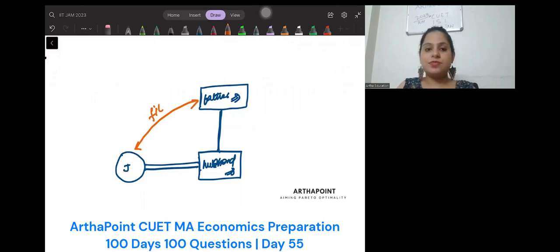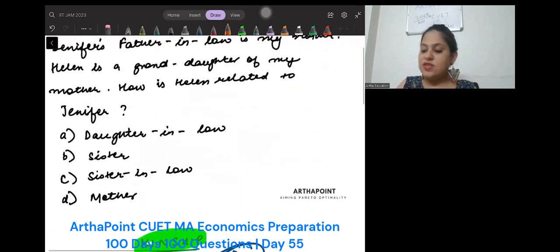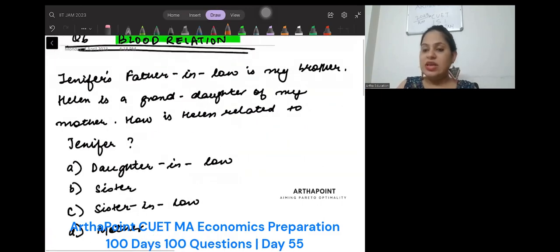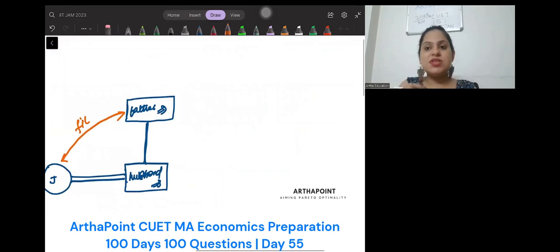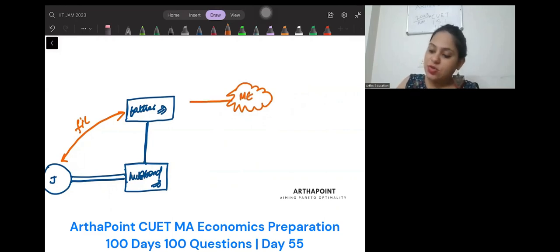Father-in-law. So Jennifer's father-in-law is my brother. So this person can be female or male. I don't know. So this is me. Who is my brother. Is my brother. So brother means single line.